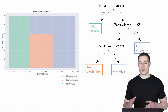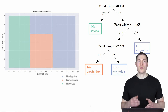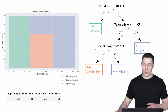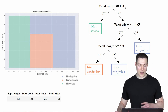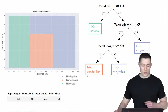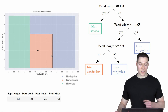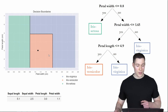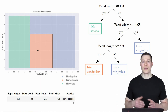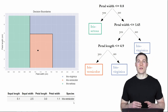We can use this decision tree just like the decision boundaries to classify any new unknown flower. For example, take a flower with petal width 1.1 and petal length 3. First, is the petal width smaller than 0.8? It's 1.1, so no. Is it smaller than 1.65? Yes. Is the petal length smaller or equal to 4.9? It's 3, so yes. We classify this flower as an iris versicolor. And looking at where this flower falls on the diagram, as expected it falls in the versicolor area — and indeed, it is an iris versicolor. So those decision boundaries can be depicted as a decision tree.